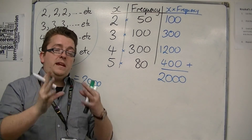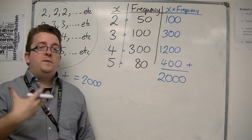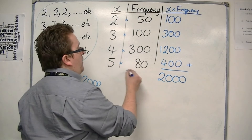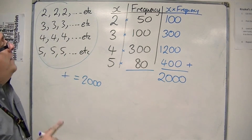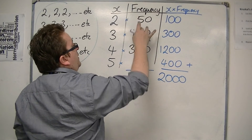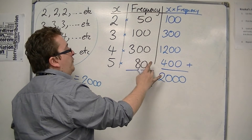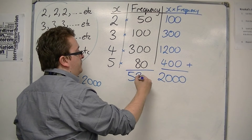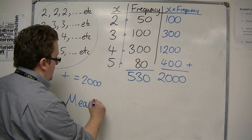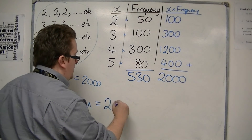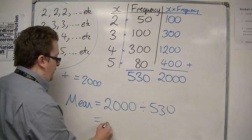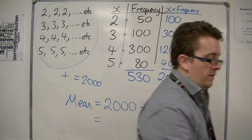Now, to work out the mean, we add them all up and divide by how many there are. We know what they add up to, so I now need to find out how many there are. That is by finding out the total of the frequency: fifty plus a hundred is a hundred and fifty, plus three hundred is four hundred and fifty, plus eighty is five hundred and thirty. So the mean is two thousand divided by five hundred and thirty.